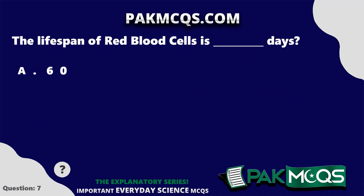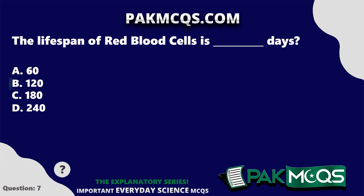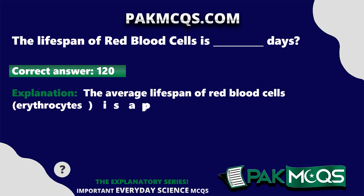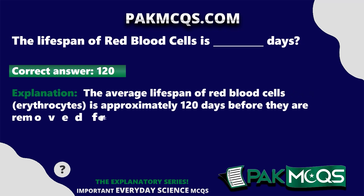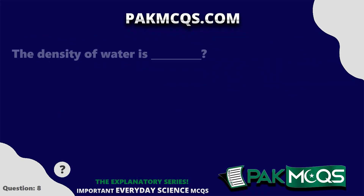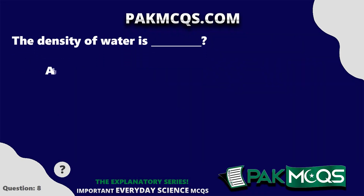The lifespan of red blood cells is how many days? 120 days. The average lifespan of red blood cells (erythrocytes) is approximately 120 days before they are removed from circulation by the body's immune system.